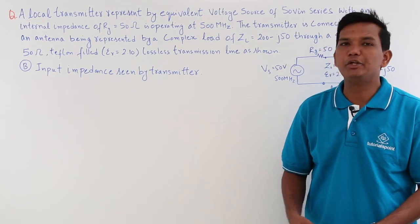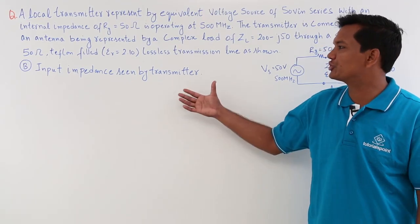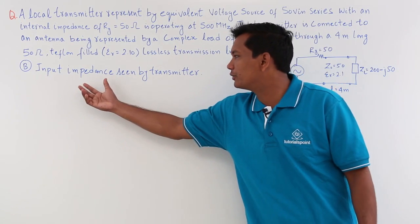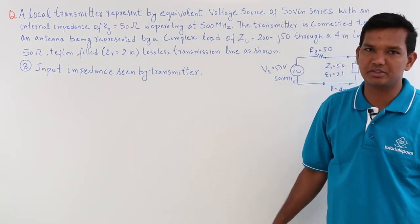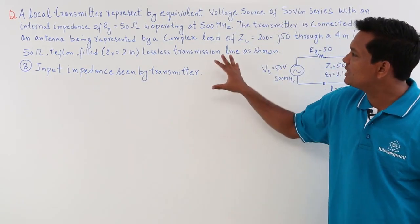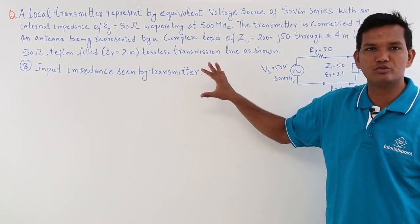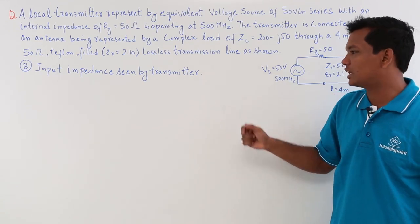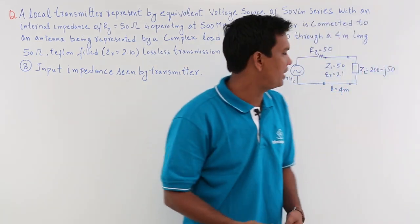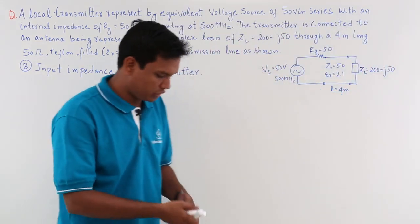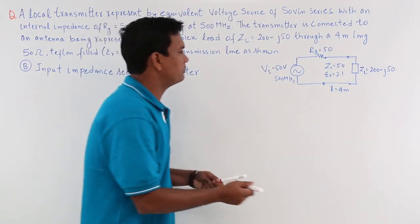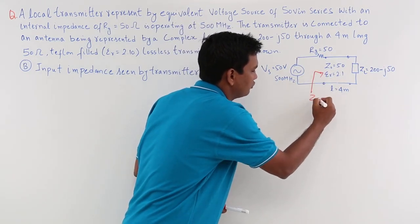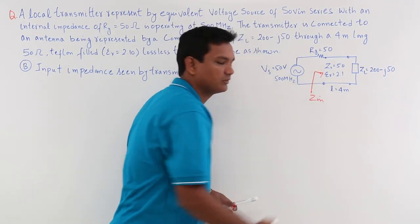In this class we will continue with the same question, but we will try to find the input impedance seen by the transmitter. It is the same question we solved in the previous video, but now I have to find what would be the input impedance if I look from here. So, I have to find the Z_in.